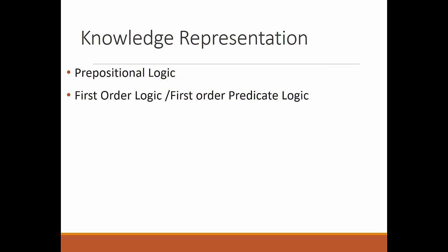As far as knowledge representation is concerned, we represent knowledge in a number of forms which we will discuss later — there will be an entire video related to that. But the kind of knowledge representation we are discussing now is called logical representation. Logical representation is one of the knowledge representations, and in this category we have two types of logics: propositional logic and first-order logic.